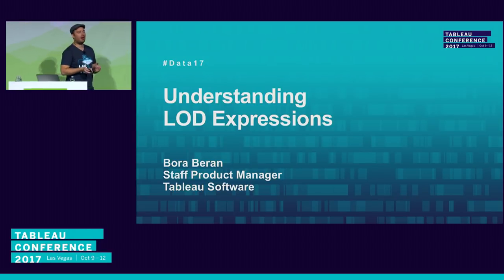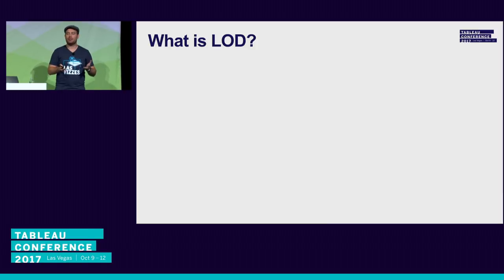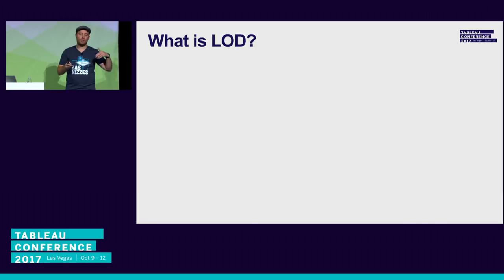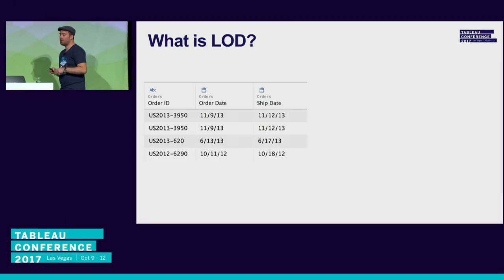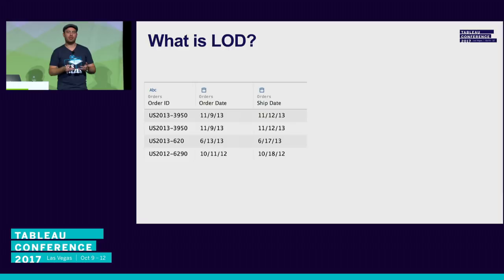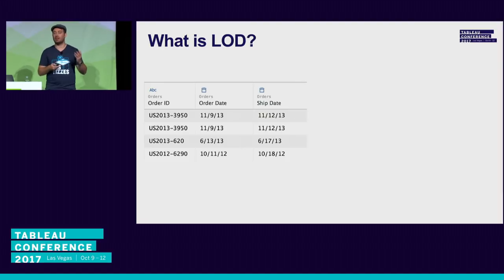Before we start, we have to define what level of detail is. Level of detail defines the granularity of your data, and the data has a granularity the moment it is collected. Imagine a transactional database where each transaction is a row — that's the level of detail of that table. If you have a sensor collecting data every second, the location, what it measures, and when it's collected will be the level of detail of that row.